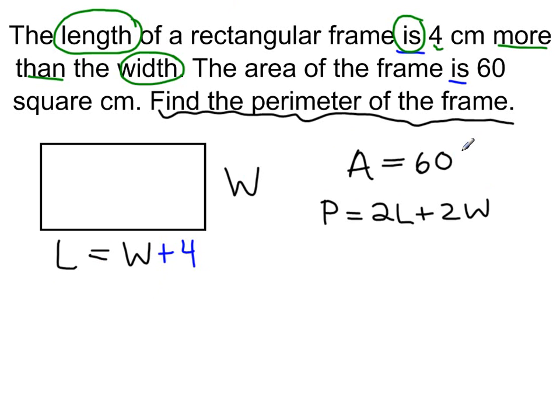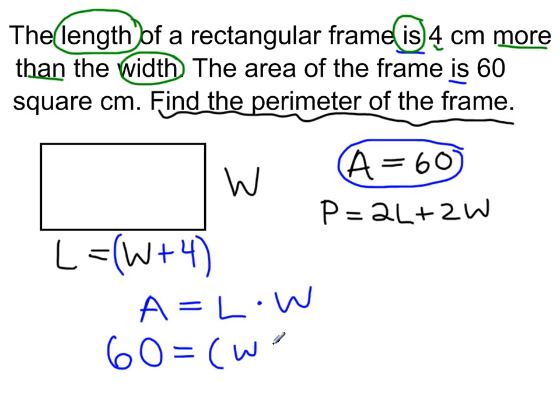The only real concrete information we were given is area is 60 centimeters squared. So I'm going to have to derive a formula that I know about, area equals length times width. With that, I'm going to plug in the information that area is 60. Length here is really W plus 4, and since this is a binomial, I'm going to put it in parentheses.